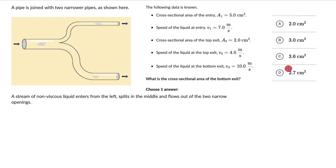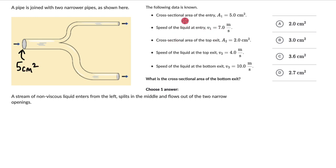Now let's make sense of all the data given to us. Cross sectional area of the entry A1 is 5 cm² — let's label that on the diagram. Speed of the liquid is 7 meters per second. Cross sectional area of the top exit A2, shown here, is 2 cm².